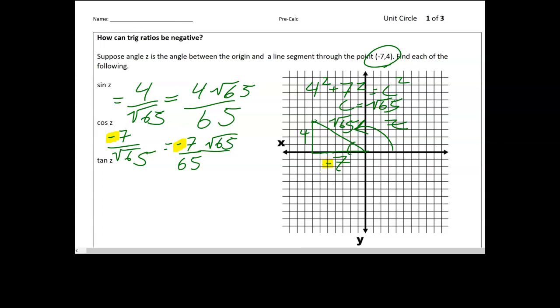And then tangent of z, well, that's just opposite over adjacent. So 4 over negative 7, which is negative 4/7. So right away, we have these trig ratios that are negative. And that's for quadrants other than 1. So remember, our quadrants are 1, 2, 3, 4. So our trig ratios can be negative whenever we imagine ourselves in a quadrant other than that first quadrant. And that really means whenever we have an angle bigger than 90 degrees.